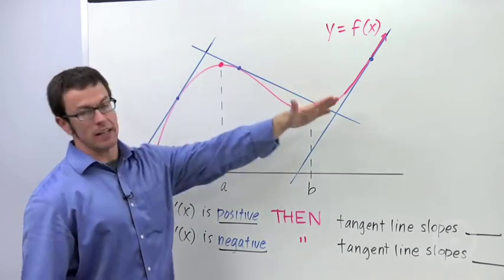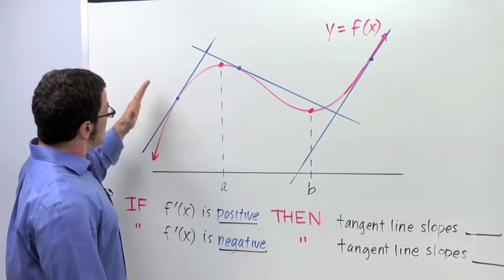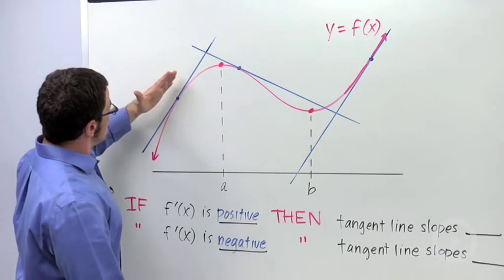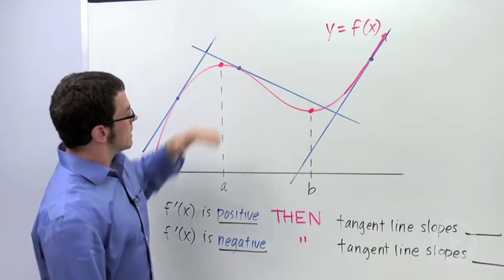And I've drawn some tangent lines in a few places. Just looking at these tangent lines, you'll notice that some of these tangent lines have positive slopes, some have negative slopes.